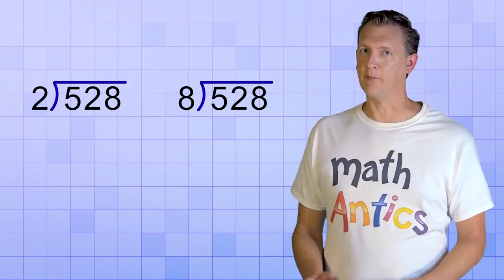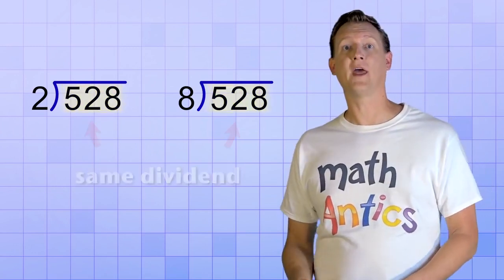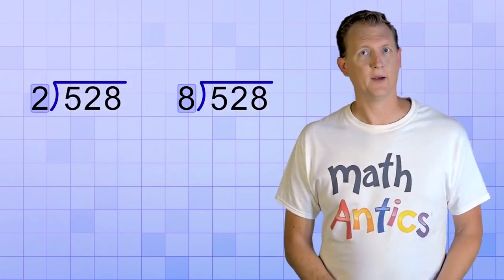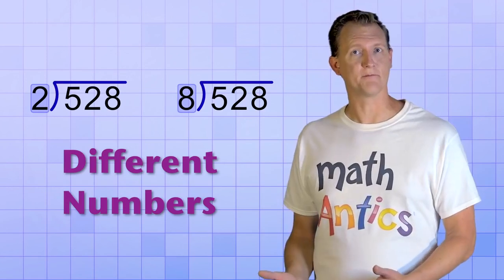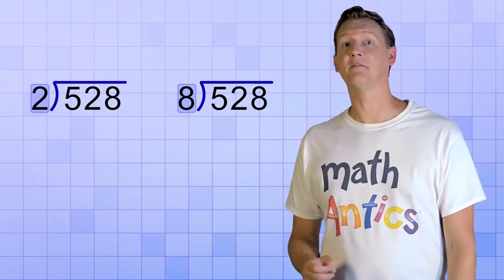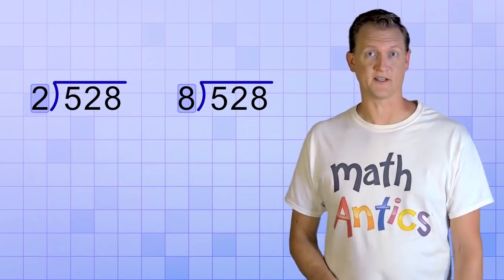To see what I mean, have a look at these two division problems. They both have the same dividend, and both have a one-digit divisor. But these divisors are different numbers, and as you'll see, that's going to affect our digit by digit division process.